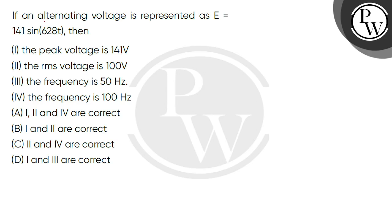Hello, let's read the question. If an alternating voltage is represented as E equals 141 sin 628t, then we have given four statements.